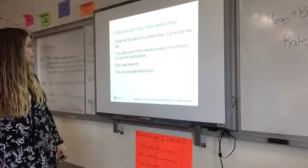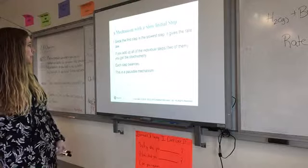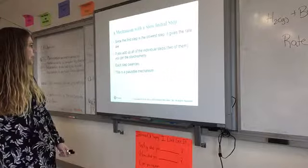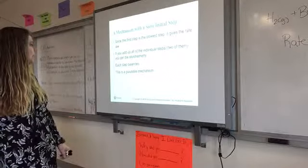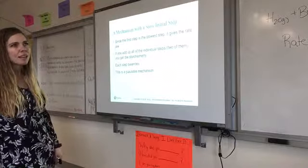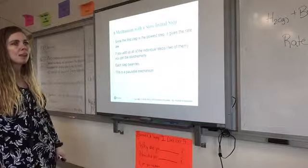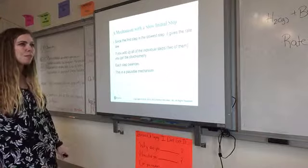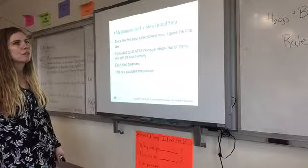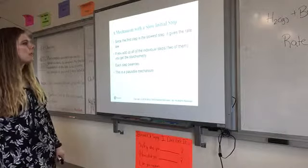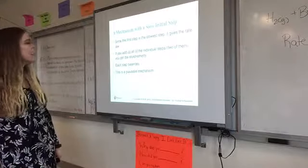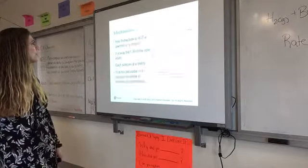Again, since the first step is the slowest step that gives the rate law. If you add up all the individual steps, you get the stoichiometry. Each step balances, and you want it to be a plausible mechanism, which means keep in mind, uni-molecular and bi-molecular processes are more likely than term-molecular. So you shouldn't have a step that's super fancy with lots of things colliding simultaneously, because that's just not likely. And that's what they mean by plausible.